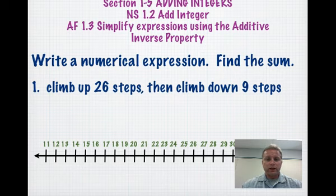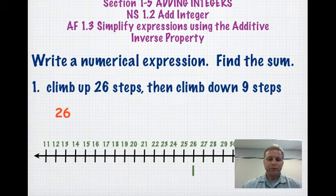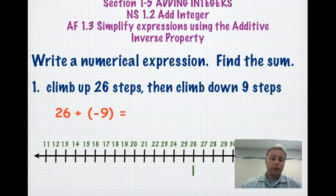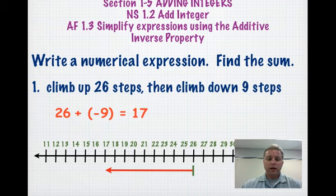One way to think of it is climbing stairs. If you climb up 26 steps and climb down 9 steps, where do you start out at? Well, you've got 26. So that's our starting point, and then we're going to add to that 9 steps down. Now, I know you probably would write it as a subtraction, and honestly I probably would too, but they're asking us to write the sum, so that means it's an addition problem. So we're going to go 9 steps down, and that puts us at a positive 17.